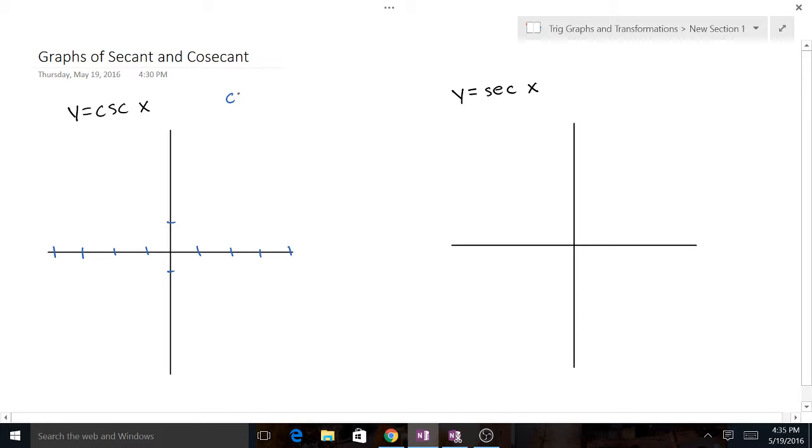And as we know, cosecant of x equals 1 over sine of x. And the best way to draw cosecant is actually to start with just drawing sine of x. So we're going to draw y equals sine of x, that's why I got the blue marker up.